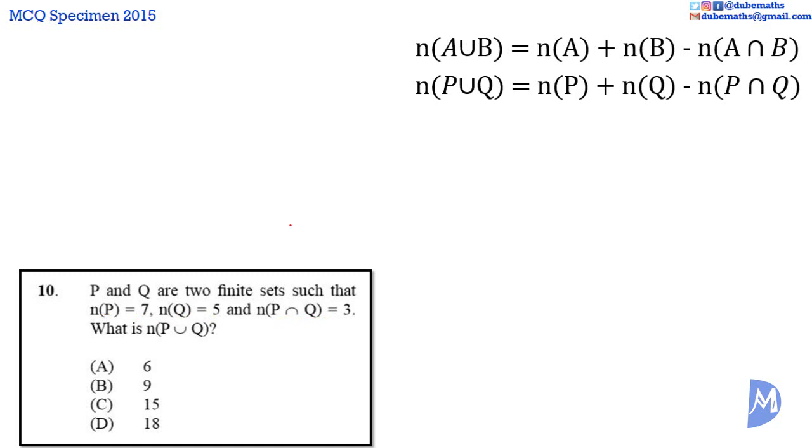Thus, the number of elements in P union Q is equal to 7 added to 5 subtract 3. The number of elements in P union Q is equal to 7 added to 5 is 12, 12 subtract 3 is equal to 9. The answer is B.